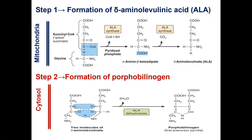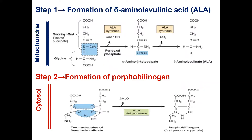Porphyrin synthesis begins with condensation of succinyl-CoA and glycine to form delta-aminolevulinic acid. This reaction is catalyzed by ALA synthase. The derivative of vitamin B6, pyridoxal phosphate, is necessary to activate glycine.